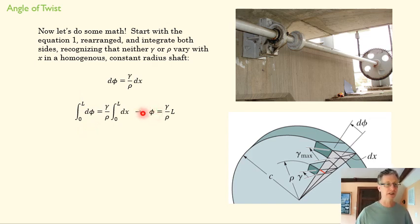That's going to be our full deformation, and dx integrated over our full length is just L. We're just measuring changes in x and adding them up over all of L. We end up with the angle of twist in terms of shear strain.